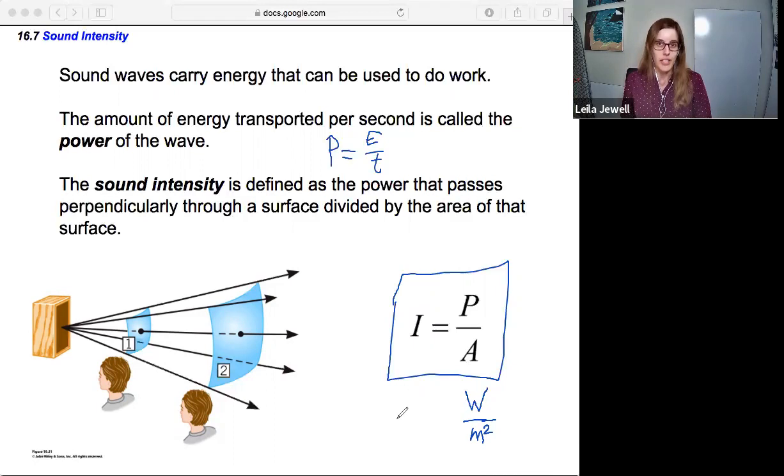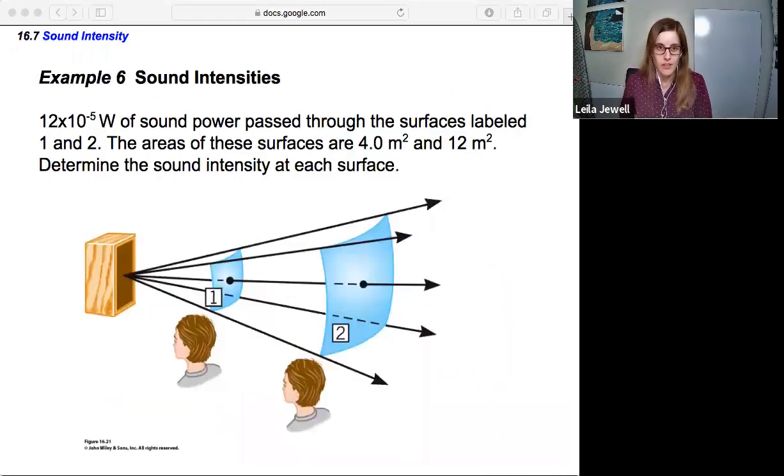With this equation, we can calculate how intense the sound is depending on where you are. Let's try this out with an example. Sound intensities: 12 times 10 to the minus fifth watts of sound power pass through surfaces labeled one and two. The area of these surfaces are 4 meters squared and 12 meters squared. Determine the sound intensity at each surface.